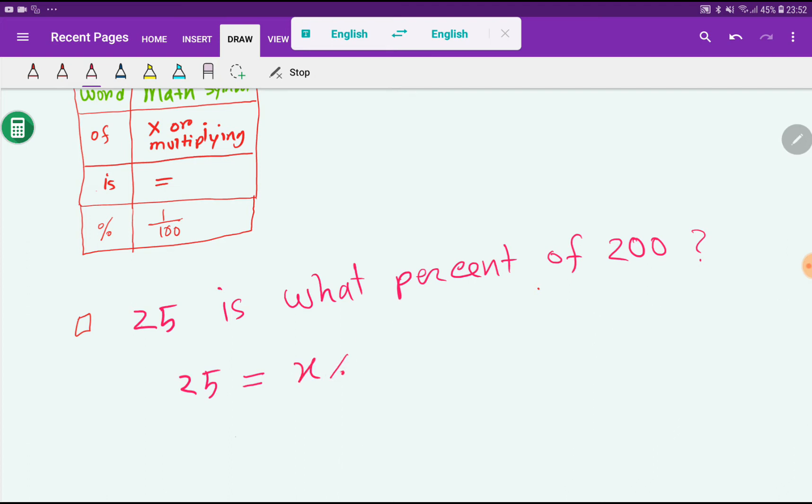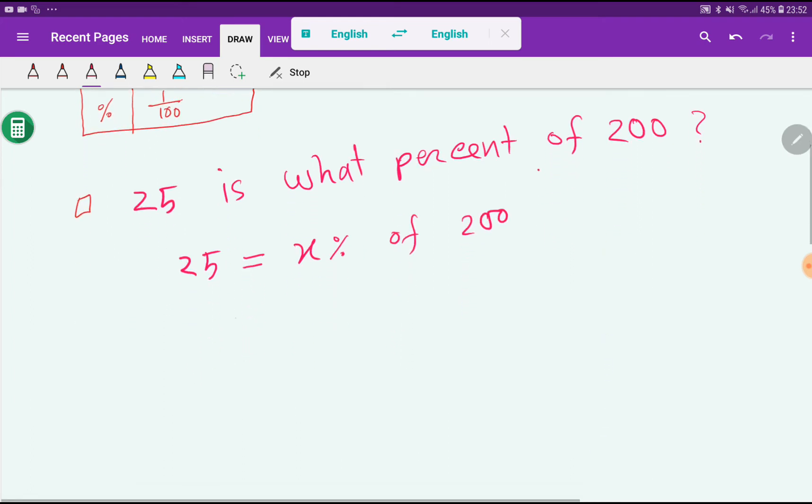We can write x divided by 100. Percent means 1 by 100, then this 'of' means multiplication, and this is 200.